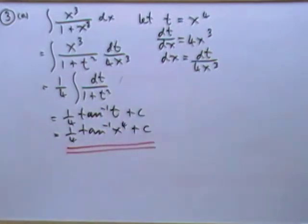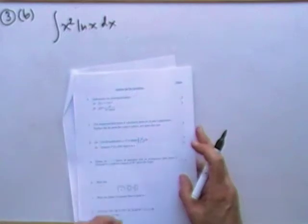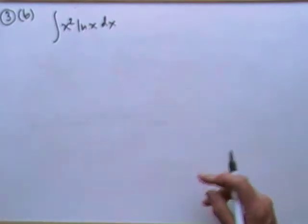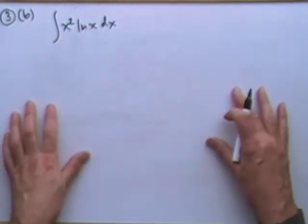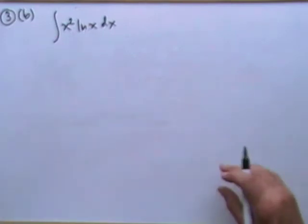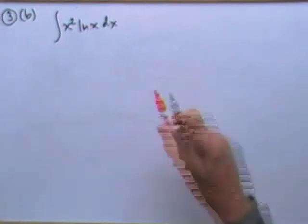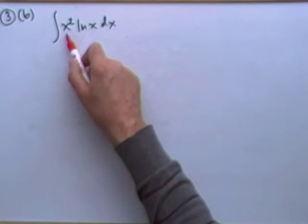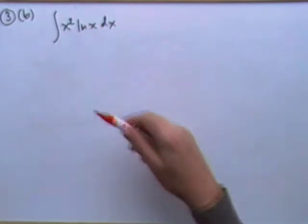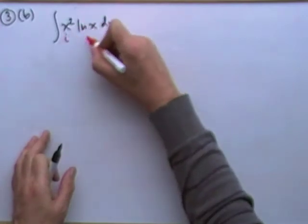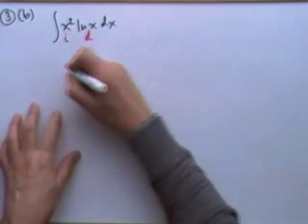Put it back the way it was. t was x to the 4, so it's 1 quarter of inverse tan of x to the 4 plus c. Right, 3 part b. Integrate x squared ln x with respect to x. Integration by parts. You spot it straight away. It's the equivalent of the product rule for differentiation. I'll have to integrate that and differentiate that.